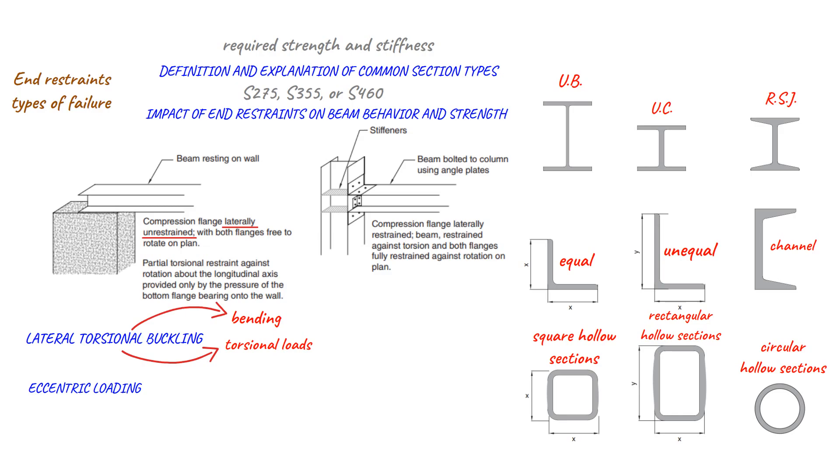However, this can be prevented by providing adequate lateral restraint, such as a concrete floor or other beams, which prevents the beam from rotating and experiencing lateral torsional buckling.